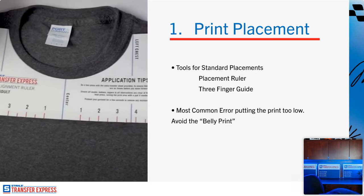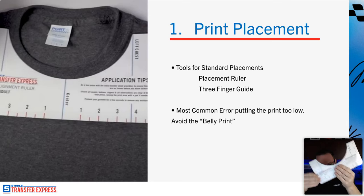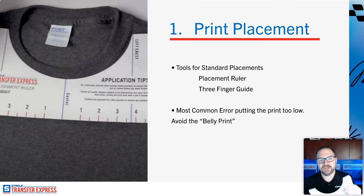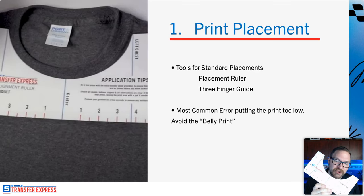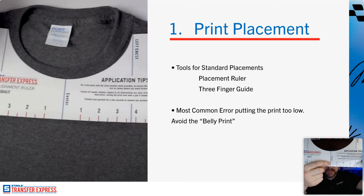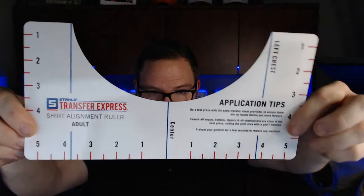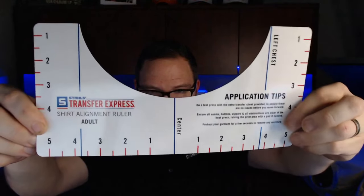Our goal as apparel decorators is to make apparel that people actually want to wear, and print placement is paramount for that. I want to show you this placement ruler — it's part of our application kit. You align it to the collar of the shirt and it's denoted for the center and both right and left chest. Let me bring these slides down and go full screen to show you how it works on the heat press.